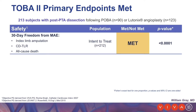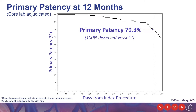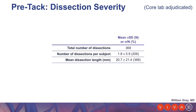The primary endpoints are listed here. The safety endpoint — 30-day freedom from MAE — was met with a very robust p-value. Efficacy endpoints were also met: primary patency at 12 months, representing freedom from clinically-driven TLR, plus freedom from binary stenosis, were both met with robust p-values. On the Kaplan-Meier chart, primary patency at 12 months in the 100% dissected vessel population was 79.3%. Freedom from clinically-driven TLR at 12 months was over 86%.